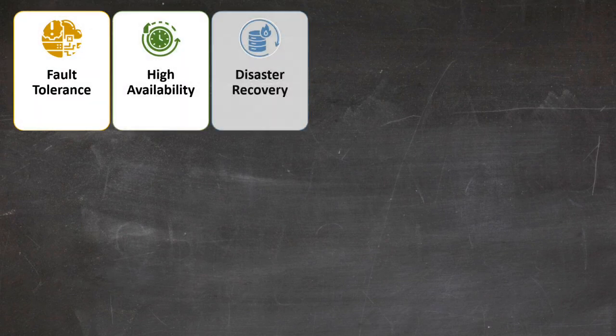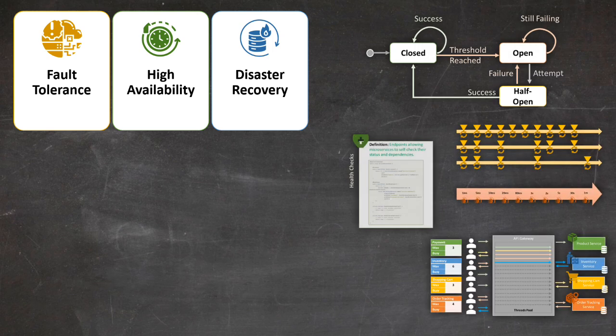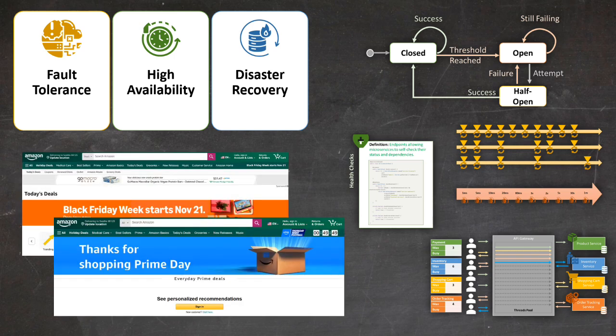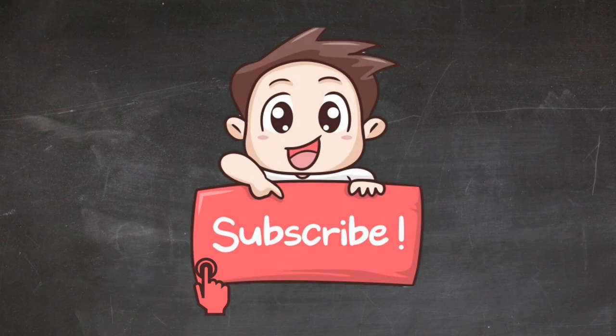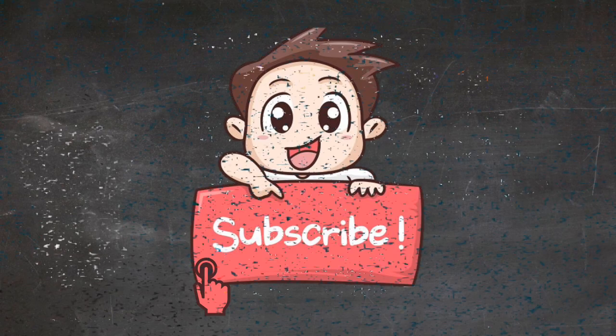To wrap up, today we've explored key resiliency concepts like fault tolerance, high availability, and disaster recovery. We've also covered essential techniques such as circuit breakers, bulkhead patterns, retry and timeout mechanisms, and health checks. These aren't just theoretical concepts — they're put into practice by teams like Amazon's high-velocity events team, who use these strategies to ensure that Today's Deals and Prime Day pages remain stable under immense traffic. Thank you for watching, and as always, for more insights on building robust, scalable systems, don't forget to subscribe to our channel. See you next time.